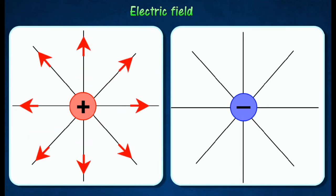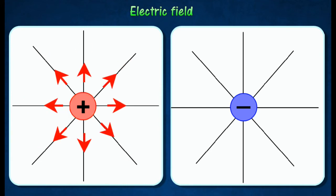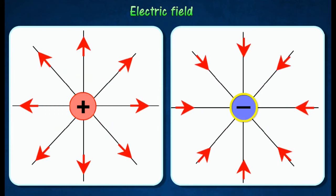The electric field is radially outwards from a positive charge, and radially inwards towards a negative charge.